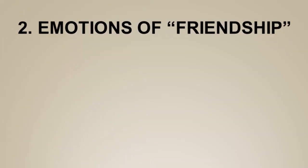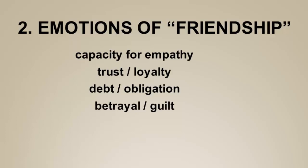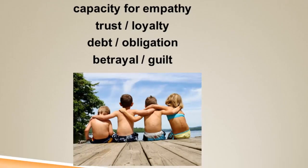The second thing we can point to is emotions associated with friendship. One is a capacity for empathy, and humans seem to have a well-developed capacity for empathy. We associate friendship with high levels of trust; we expect friends to be loyal and not to betray our trust. We have senses of mutual debt and obligation to one another — even if we say we'll do anything for a friend without return, in fact we generally expect our friends to reciprocate selflessly. We similarly have very pronounced feelings of betrayal and guilt if this close relationship's trust and loyalty isn't repaid.